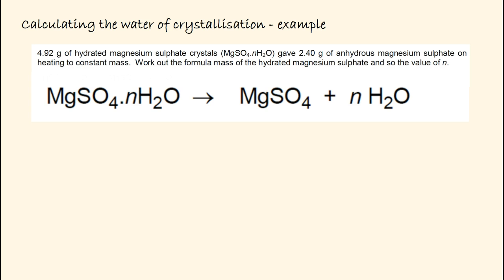Let's look at an example for calculating the water of crystallization. Here's a question: 4.92 grams of hydrated magnesium sulfate crystals gave 2.40 grams of anhydrous magnesium sulfate on heating to constant mass. Heating to constant mass means no more water was able to come away.